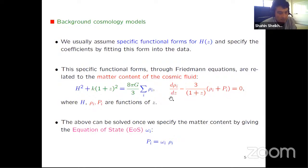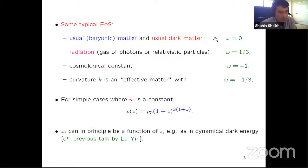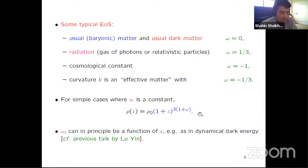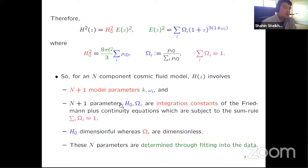One can solve this equation once we have equations of state, and then read the Z-dependence of H. Some typical equations of state are matter with omega equal to zero, radiation with omega equals one-third, cosmological constant omega equals minus one, and curvature effectively viewed as a matter component with equation of state minus one-third. If the equation of state W is constant, one can solve the functional form of rho(Z) in a simple power-law form. So H(Z) up to an overall scale H_0 is related to the matter content of the model, where E(Z) has dimensionless parameters.